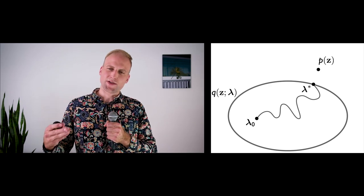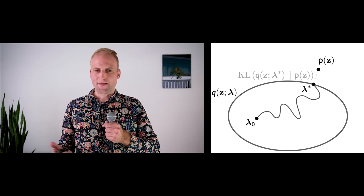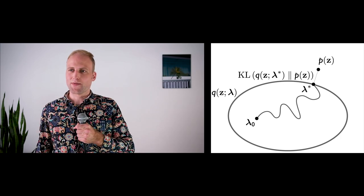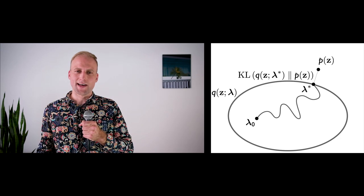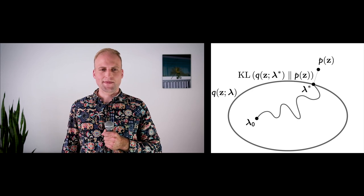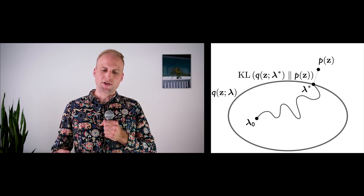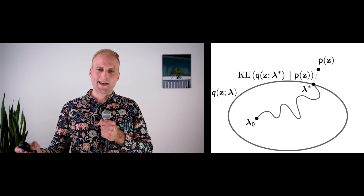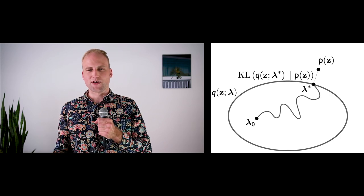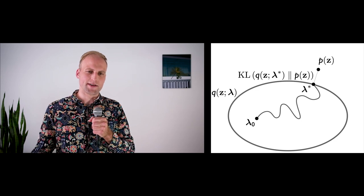In variational inference, we typically use the Kullback-Leibler divergence — the relative entropy between the approximate distribution q of z parametrized by lambda and the probabilistic model p of z. The recipe is: first choose which model to study, p of z; then define the variational family q of z parametrized by lambda, illustrated by a cartoon oval; then vary these parameters, constrained by the KL divergence.